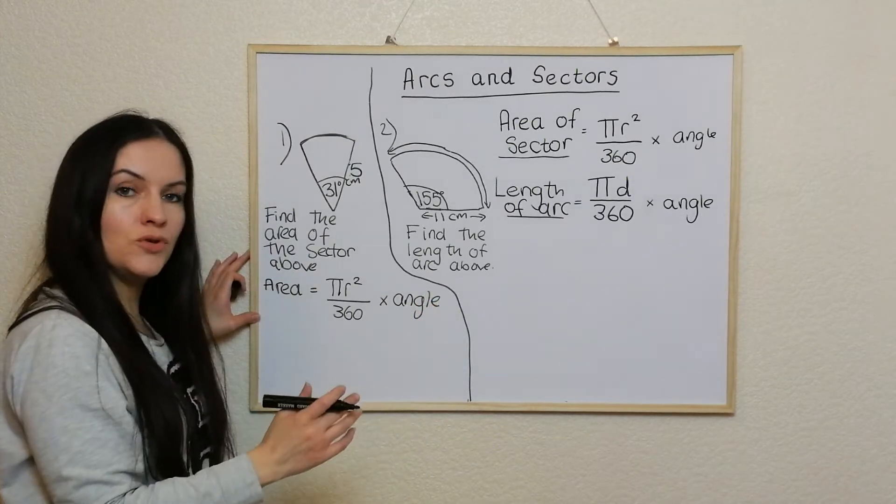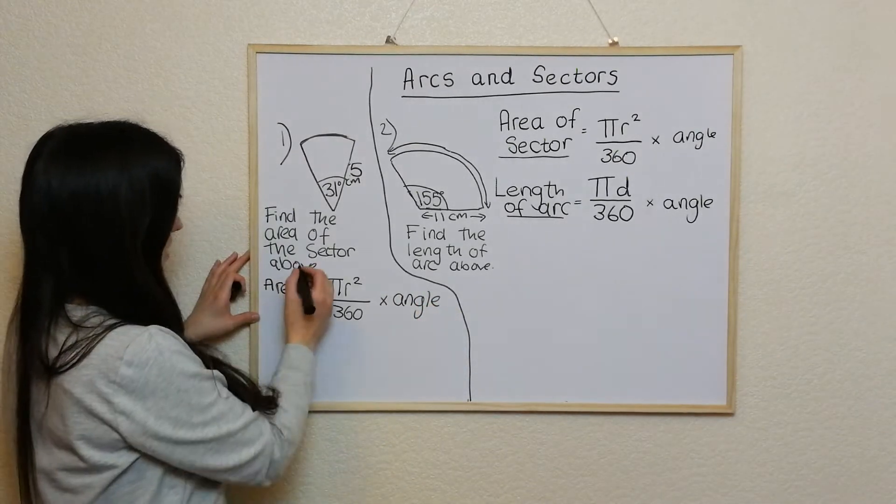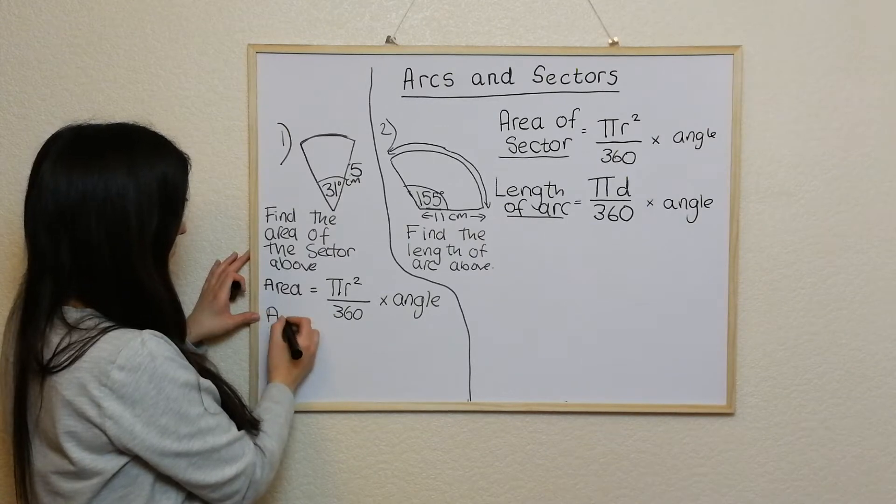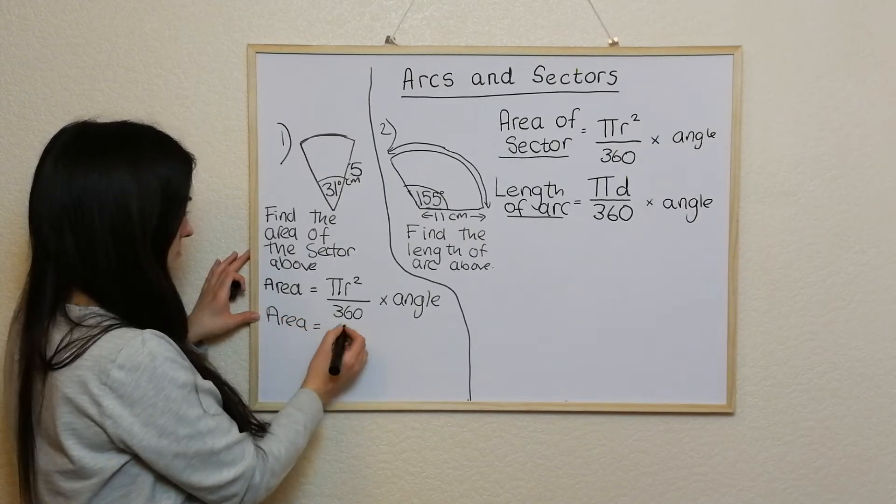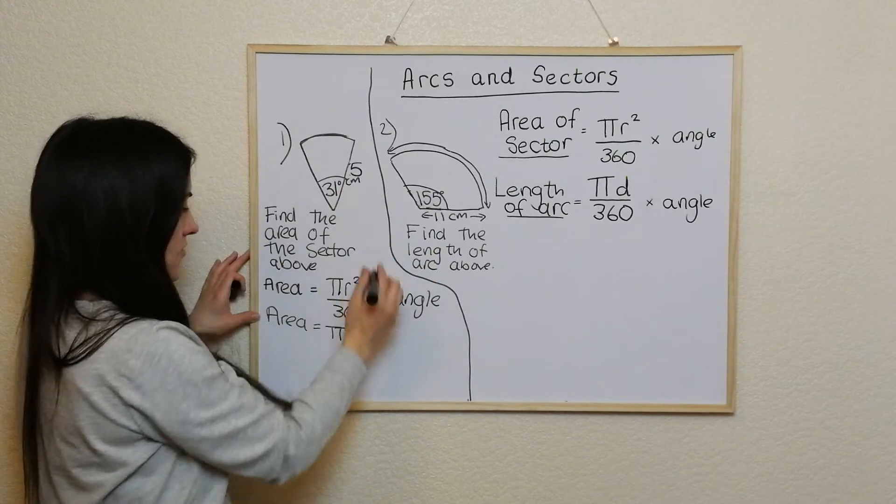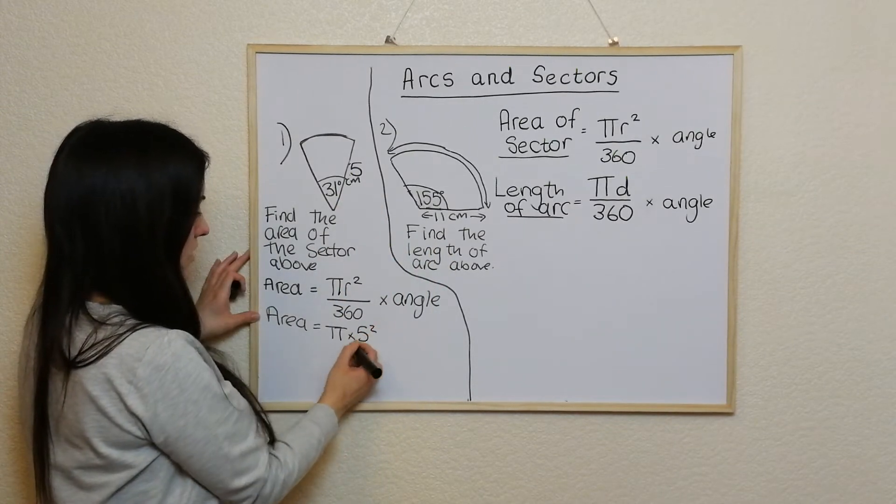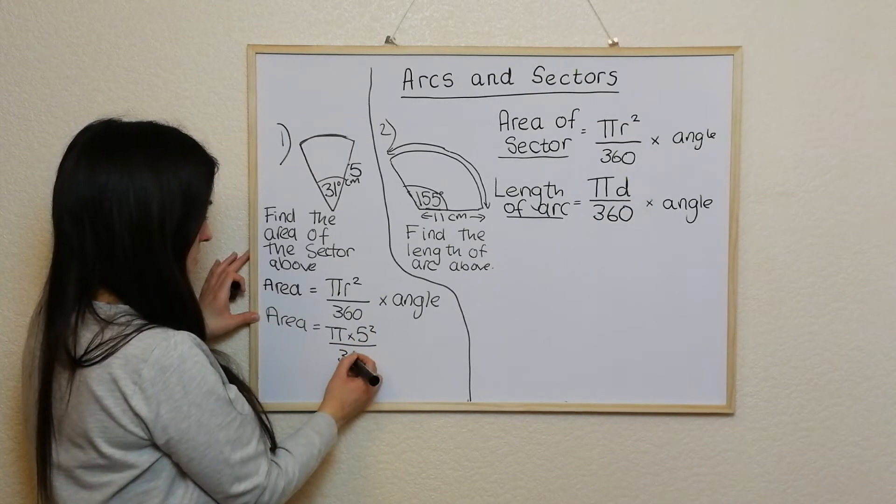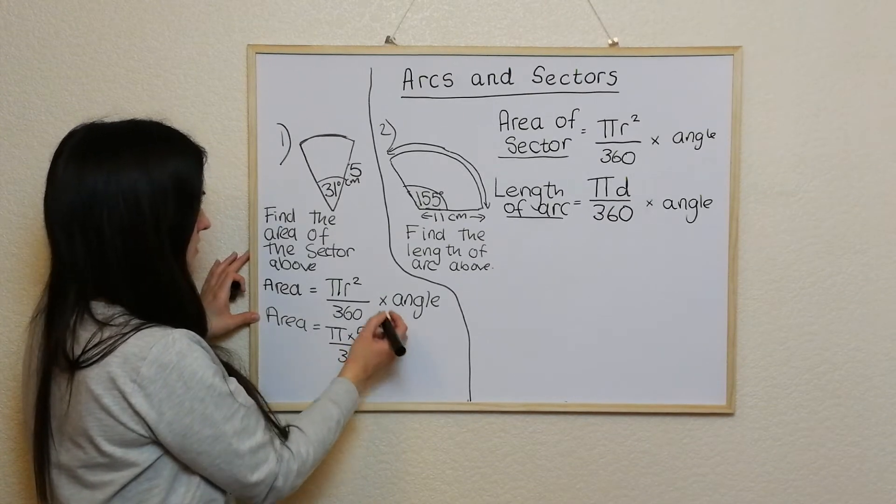So that's the formula I'm going to be using. So it's the area I'm trying to find. So it's pi times, so the radius in this one is 5, 5 squared divided by 360 times 31.